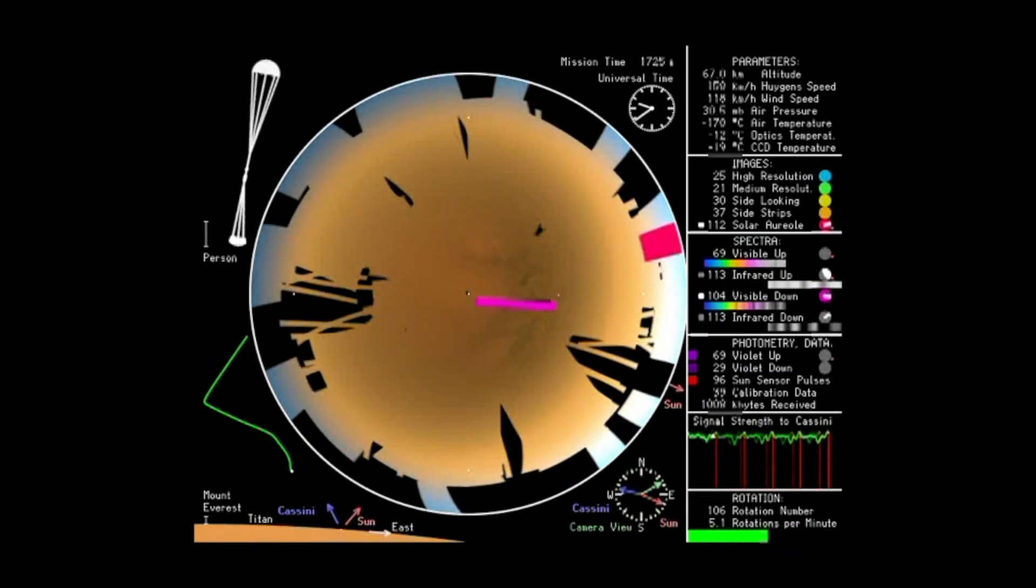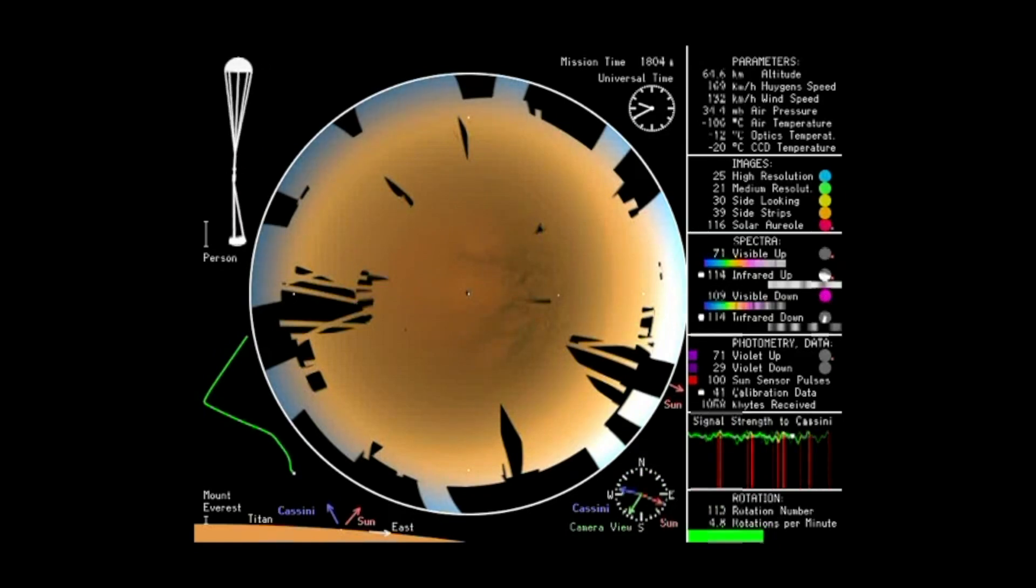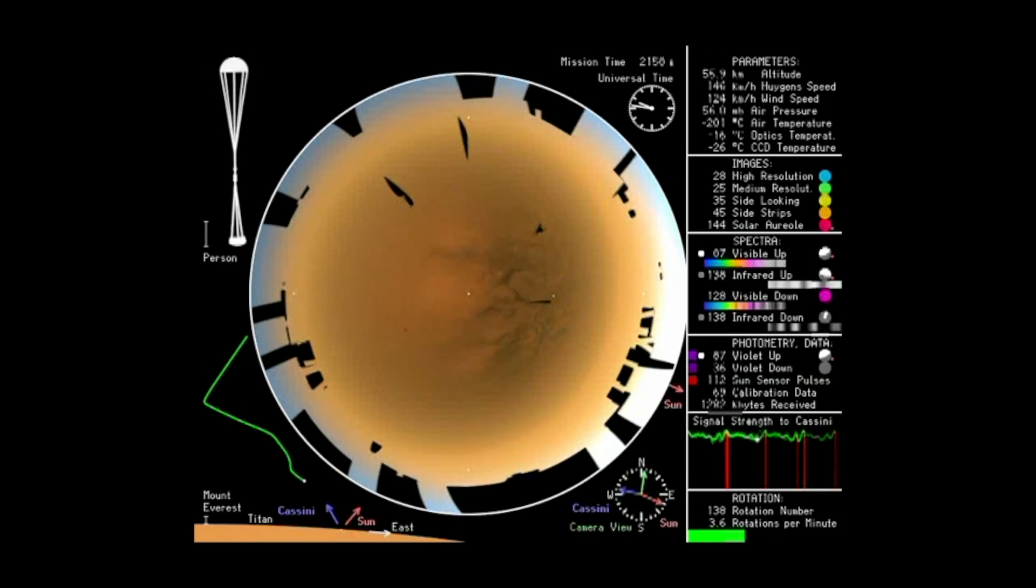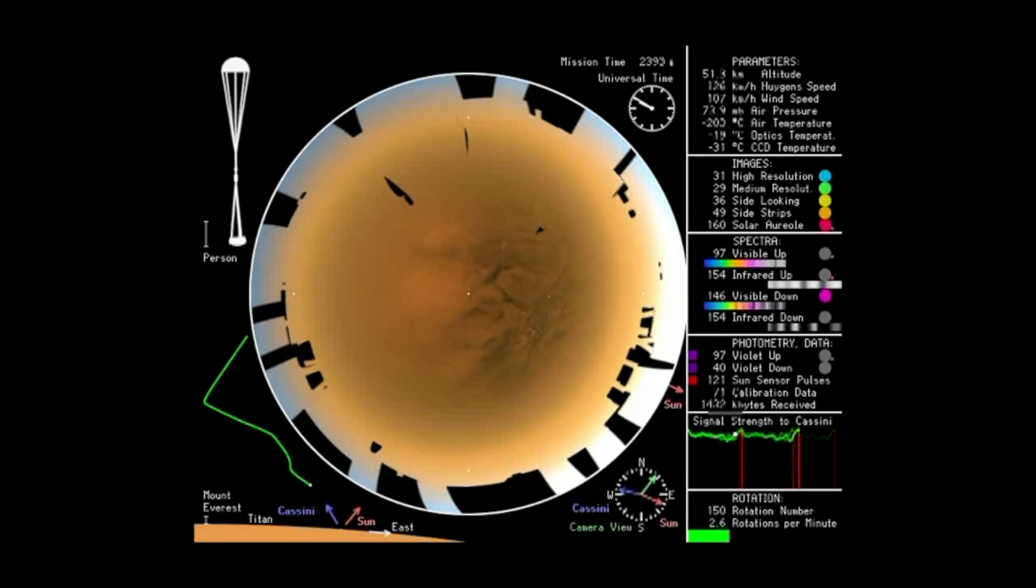All of that interest from the science community then led to the Cassini mission. NASA built the Cassini spacecraft and the European Space Agency built the Titan probe called Huygens, named after the discoverer of Titan. So we sent this pair to the Saturn system and the Huygens probe did successfully land on the surface of Titan, found an absolutely amazing world.